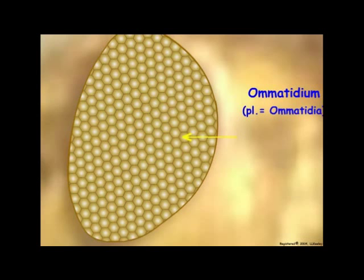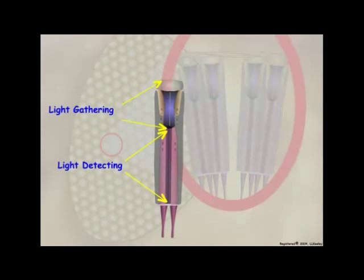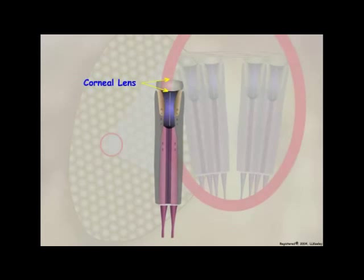Let us look at the detailed structure of an ommatidium. An ommatidium is divided into light-gathering and light-detecting components. The corneal lens is transparent cuticle that is secreted by two modified epidermal cells called corneagen cells into the primary pigment cells.